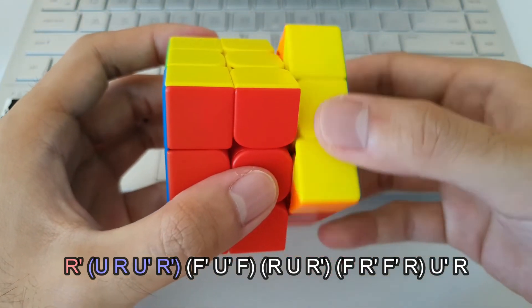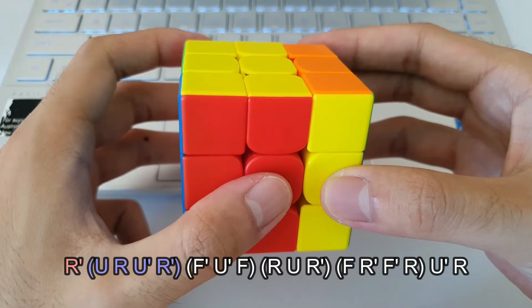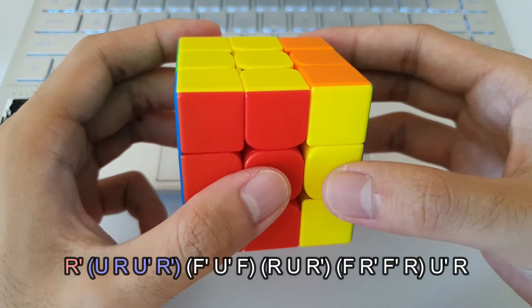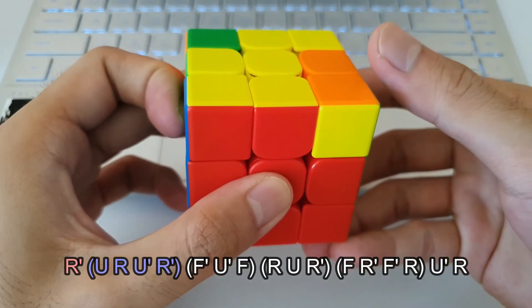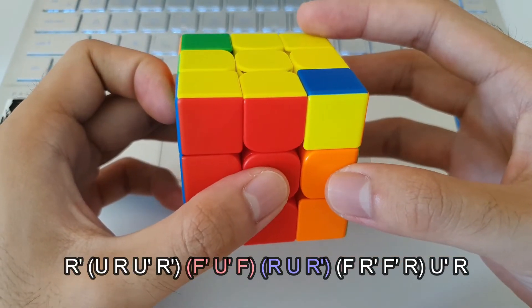So I always remember that I start off with the R'. And now the next four moves, I kind of think of it as an inverse sexy move. So U R U' R'.